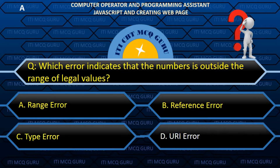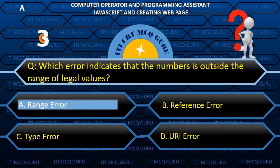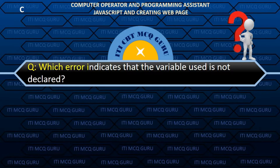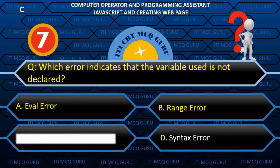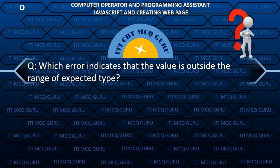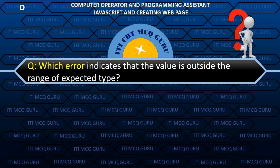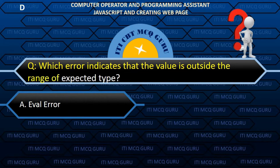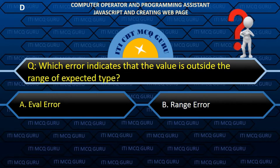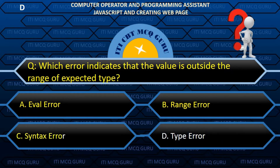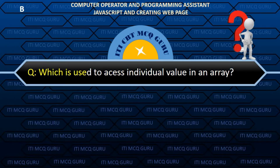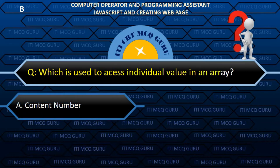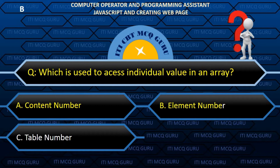Which error indicates that the variable used is not declared? C. ReferenceError. Which error indicates that the value is outside the range of the expected type? B. TypeError. Which is used to access an individual value in an array? B. Element number.